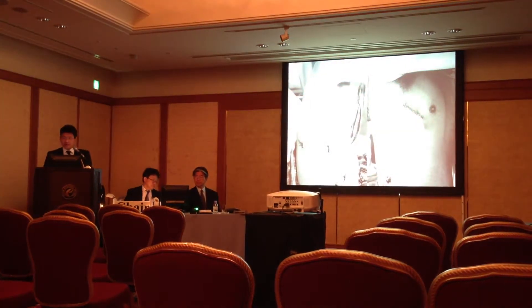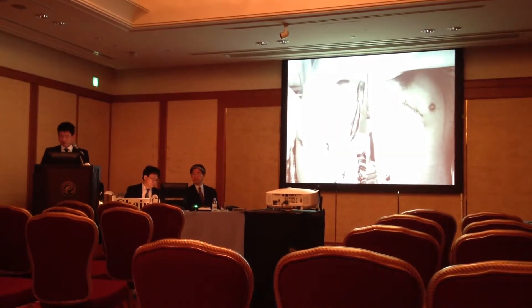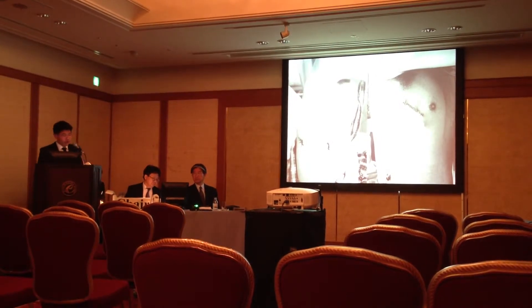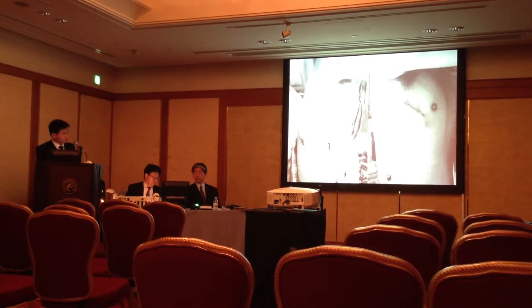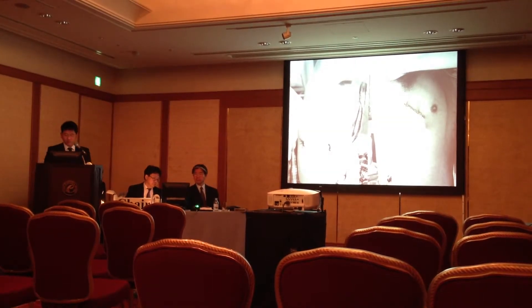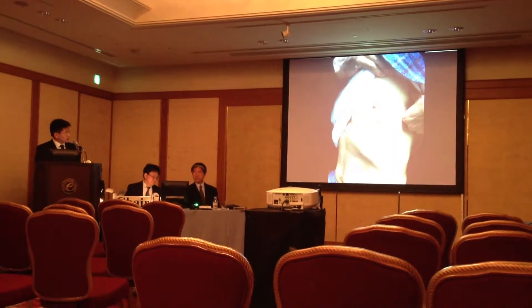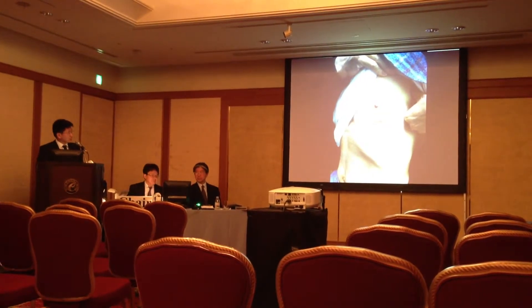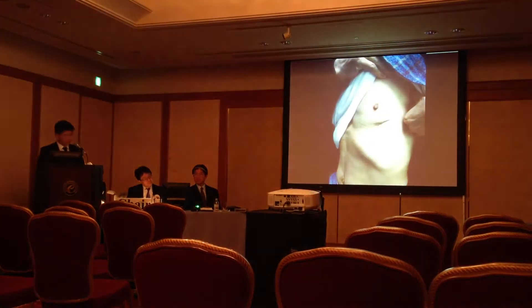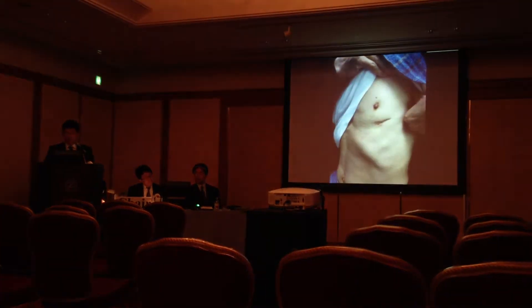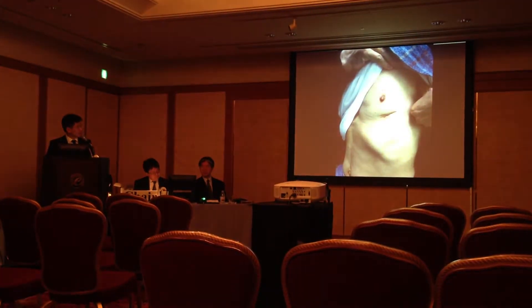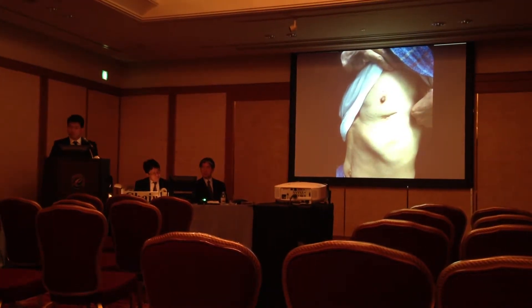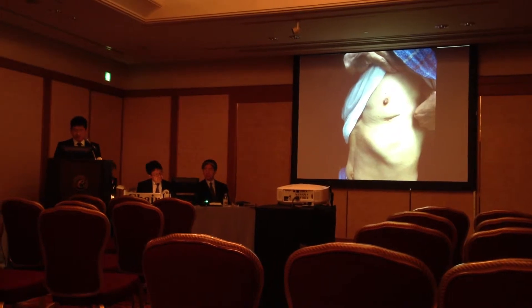On the left side is a standard thoracotomy, and on the right side is a three-port VATS. There are three wounds here. This is a patient who underwent a single-port left lower lobectomy for early-stage lung cancer. Although there is a major difference in wound sizes, having two fewer wounds may be better for the patient.